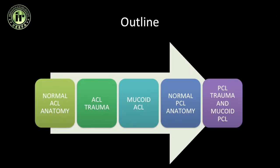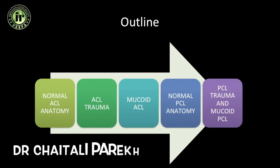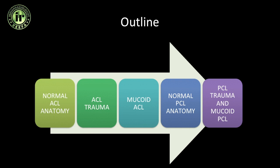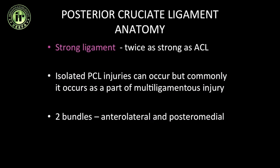Let us have a short discussion about the posterior cruciate ligament, beginning with its anatomy. The PCL is a strong ligament — it is twice as strong as the anterior cruciate ligament.